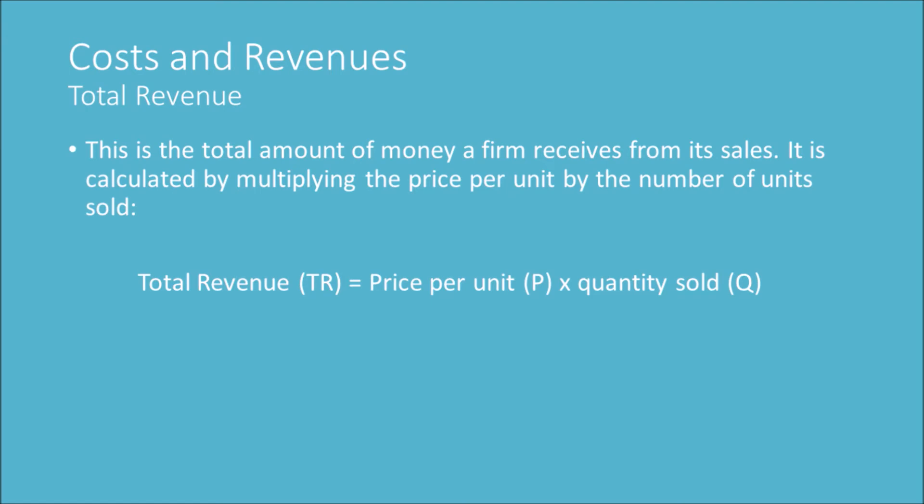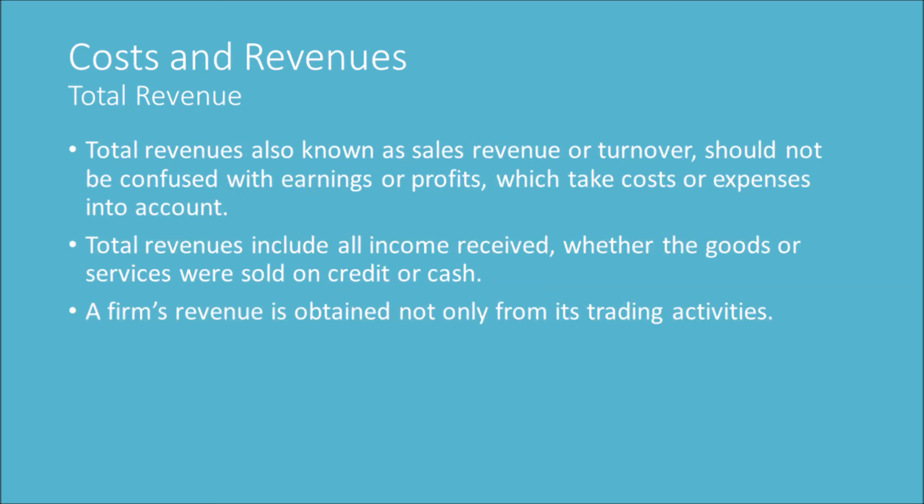Total revenue: This is the total amount of money a firm receives from its sales. It is calculated by multiplying the price per unit by the number of units sold. Total revenue (TR) = Price per unit (P) × Quantity sold (Q).